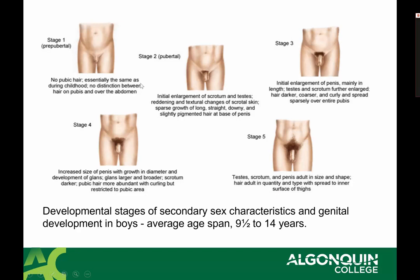Tanner stage two is the onset of adolescence — growth of the sex organs both externally and internally, with textural changes and hair beginning to grow in a characteristic pattern. Remember that central-to-peripheral is the typical growth pattern in childhood, and hair growth follows that same pattern, starting centrally and moving more peripherally. Changes continue through to about stage five, as you can read in the slide descriptions.